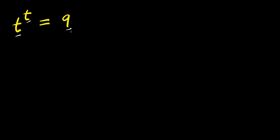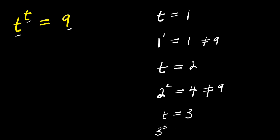We are solving for the value of t that satisfies this equation. If you consider t equals 1, what we will have here is 1 to the power of 1, and this will give you 1 which is not 9. If you consider t equals 2, what you will have here is 2 to the power of 2, and this is 4 which is also not 9. If you consider t equals 3, what you will have is 3 to the power of 3, which is 27 and this is not 9.